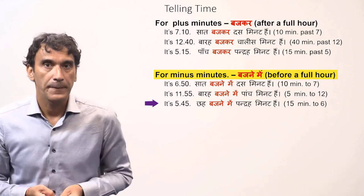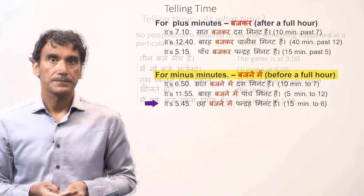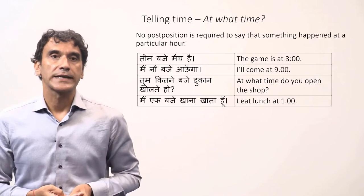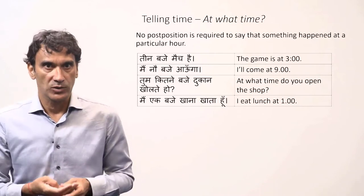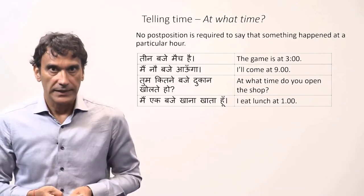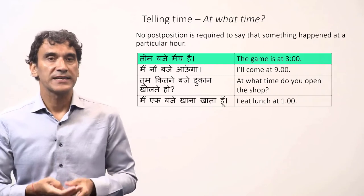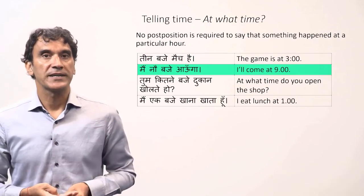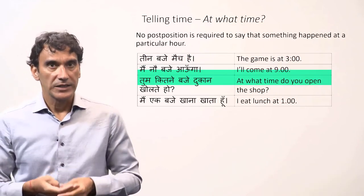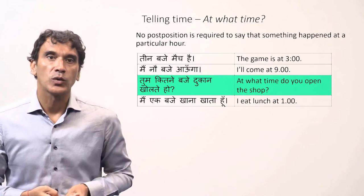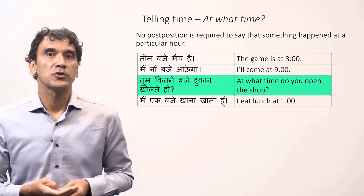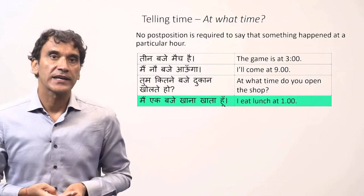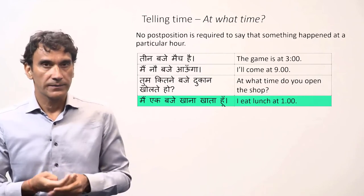No post-position is required to say that something happened at a particular hour when baje is used. Teen baje maech hai — the game is at three. Mein no baje aaon ga — I'll come at nine. Tum kitne baje dukaan kholte ho — at what time do you open the shop? Mein ek baje khana khata hoon — I eat lunch at one.